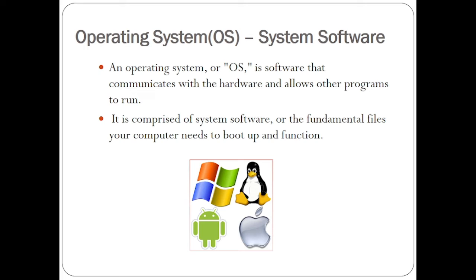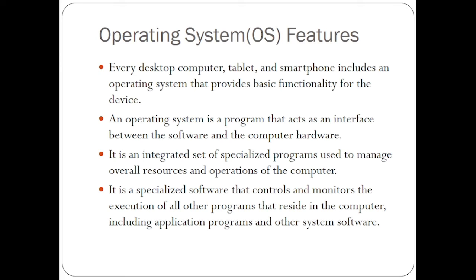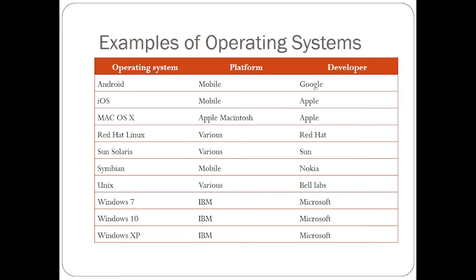When you talk about operating system or system software, it cuts across — we have computer system softwares and mobile system softwares. For mobile we can have Android, and for computers we can have Linux and so on. Operating systems are installed within your smartphone or your computer so that they handle the hardware. Hardware cannot function without the operating system. I normally look at the operating system as the blood of the computer — it allows seamless communication between the hardware and other installed programs. We have additional examples from the mobile and computer platforms, such as Unix and Windows, including the latest versions like Windows 11.